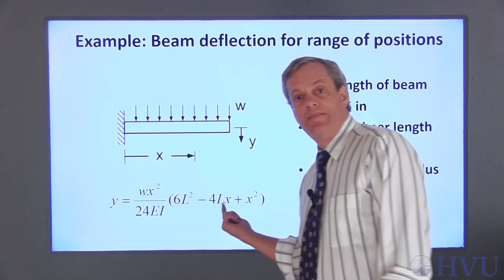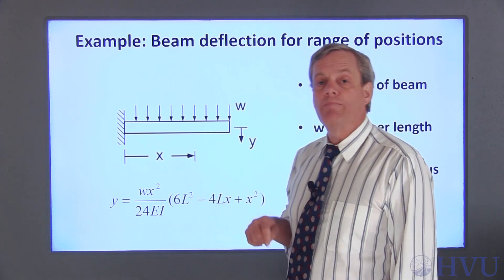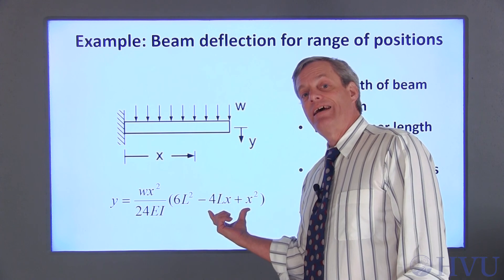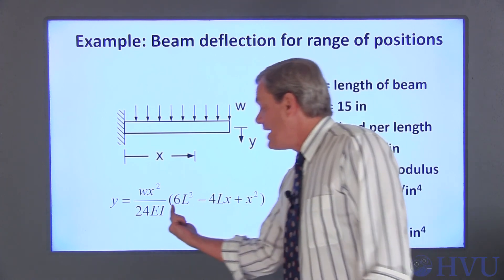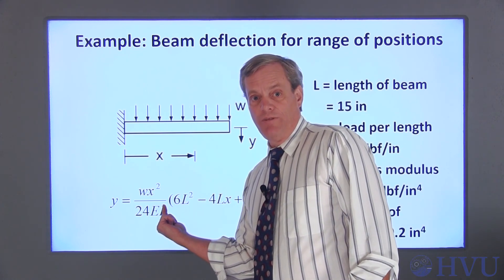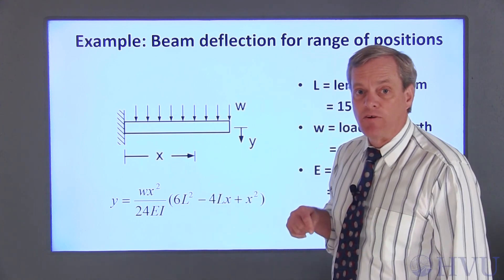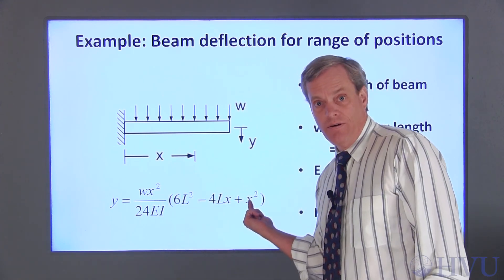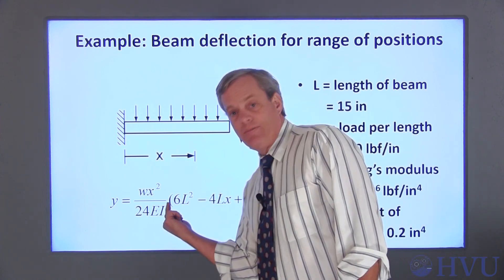This array and this array need to be multiplied on a point-by-point basis because the location of X in this term needs to correspond to the X location in this term. I need to use a dot times multiplier here. In summary, I need to use a dot caret here and here and a dot times here.